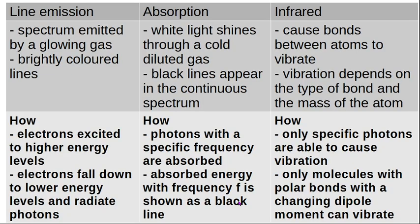To summarize: a line emission spectrum is caused by a glowing gas and gives you brightly colored lines. An absorption spectrum is when white light goes through a cold gas and black lines appear in the rainbow that comes out. An infrared spectrum is when bonds between atoms vibrate — how much they vibrate depends on the type of bond and the mass of the atom. Emission involves excited electrons falling down to a lower energy level. In absorption, the cold gas absorbs certain photons so they're missing from the output — black is an absence of light. In infrared, only certain photons cause vibration, and only polar molecules with a dipole moment will absorb them.